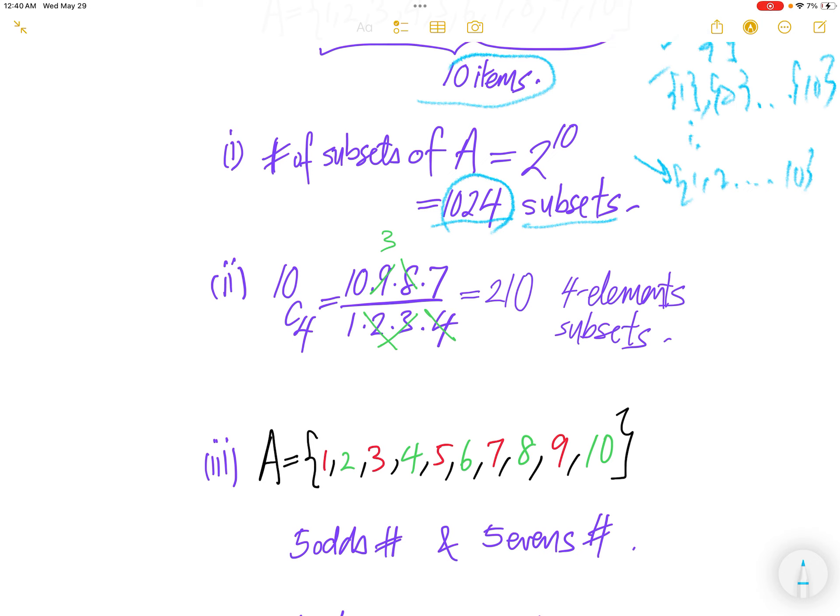How many subsets of 4 elements can you form? Using the formula, 10 choose 4, 10 choose 4 is equal to 10 times 9 times 8 times 7 divided by 1 times 2 times 3 times 4, which is equal to 210 4-element subsets.